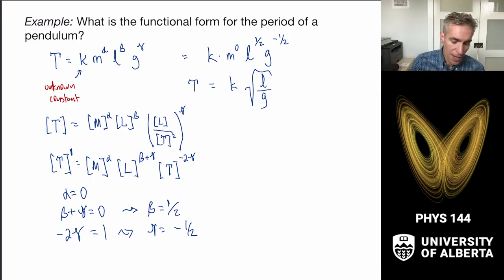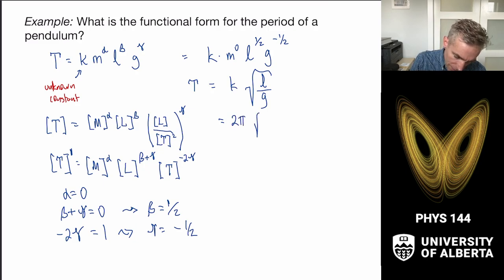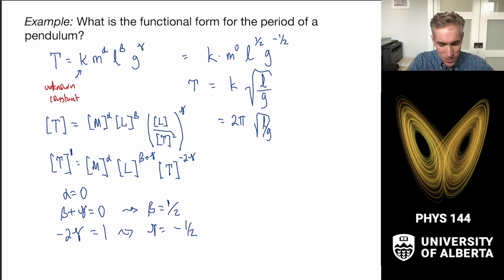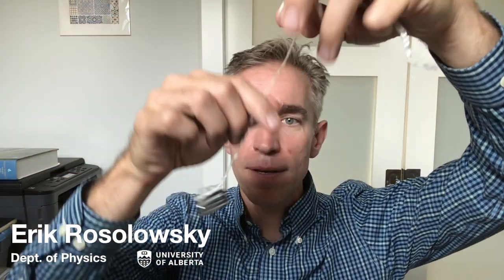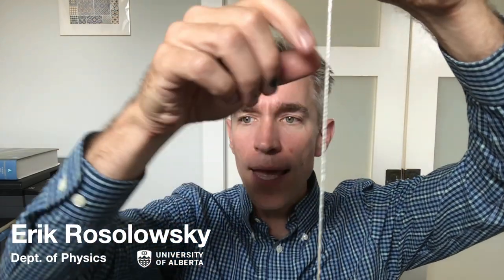We don't actually know the constant k from this method alone. It turns out from actual theory — which we can do in Physics 146 — that T = 2π√(L/g). The 2π comes from actually doing the physics. But by knowing nothing other than putting together a simple physical model, we've figured out that the period depends on the length. If I make the pendulum shorter, it goes back and forth faster. And if I take another little mass and add it to my pendulum to increase the mass, the period is basically the same — which is really pretty cool.